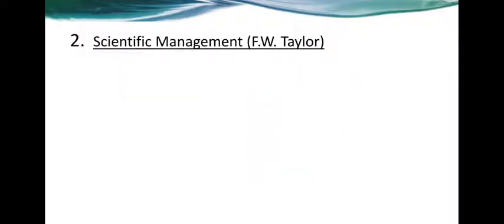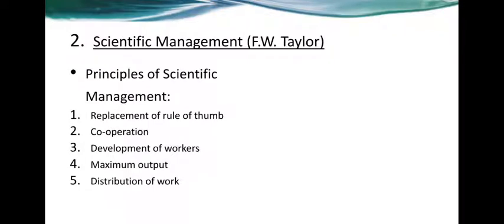Now comes the second part of the classical approach: scientific management by F.W. Taylor. As the name suggests, everything here is based on certain principles and cause-and-effect relationships. The first principle is replacement of rule of thumb — every work should be planned properly before it is carried out. Second is mutual cooperation among all departments. Third is proper development of workers for efficient and effective performance. The last two principles state that work should be divided properly to get maximum output.